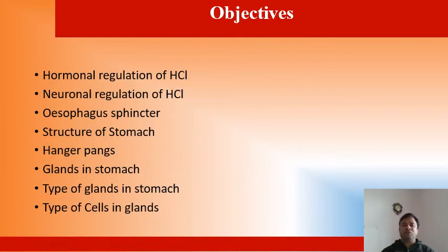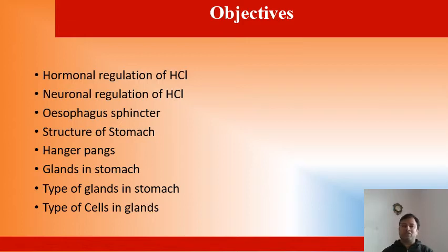Now we will discuss hormonal regulation of hydrochloric acid, neuronal regulation of hydrochloric acid, some discussion about the esophageal sphincter, structure of the stomach, hunger pains, glands in the stomach, types of glands in the stomach, and types of cells in the glands.